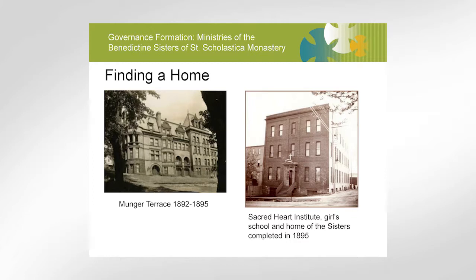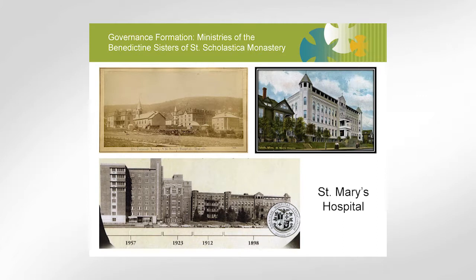When the sisters came, there wasn't any place to live at first, so they rented a part of the newly built Munger Terrace. The bishop had one half of the building and the sisters had the other half, running a school out of it. They were able to complete their own building in 1895. Originally the place where St. Mary's is in Duluth was where the mother house was supposed to be, but Bishop McGulrick persuaded them to give that land for the hospital, and they found another space. The new St. Mary's was opened in 1898.